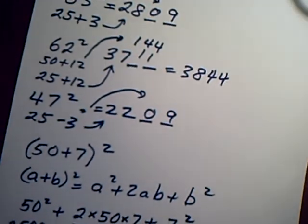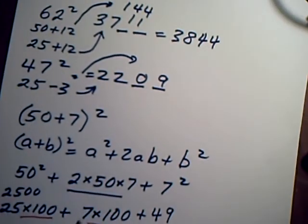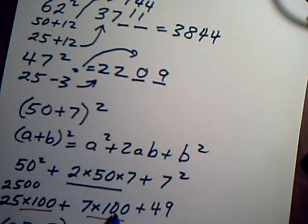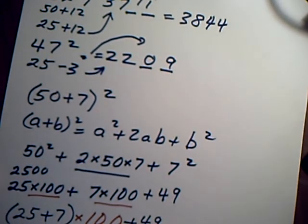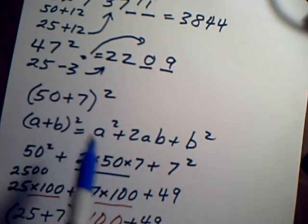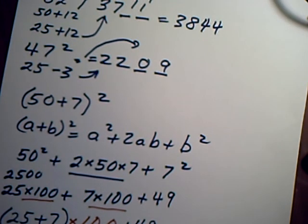Only because the numbers are in the 50s does this happen. When you have 2 × 50 you get 100, so you can factor it out and it's going to be always 25 plus that other digit. So that's why it works.